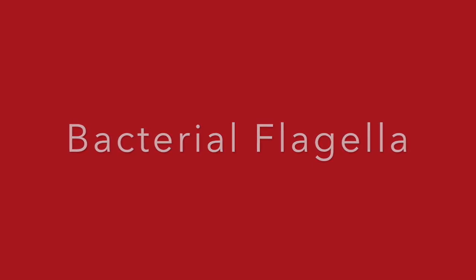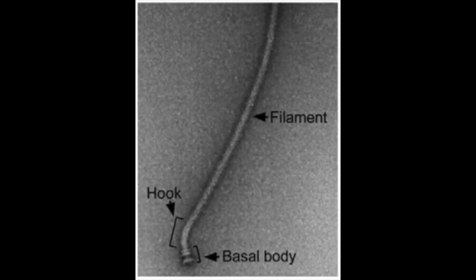Let's start with bacterial flagella. A bacterial flagella has three main parts: the filament, hook, and basal body. The basal body is embedded in the cell membrane and also contains the reversible rotary motor that makes the flagella move.